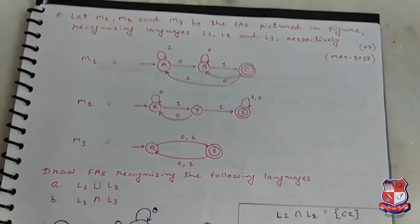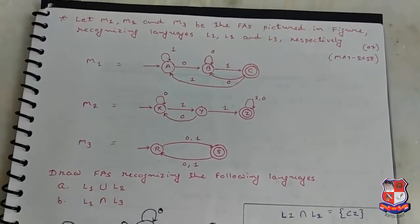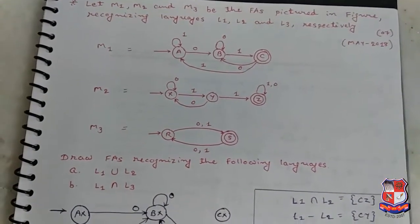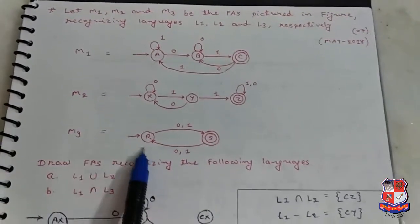Here three automata are given. Draw FA recognizing the following languages: first one L1 union L2, and L1 intersect L3.